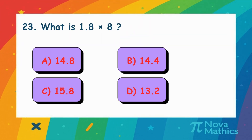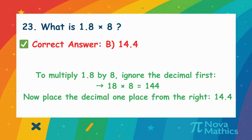22. What is 1.8 times 8? Let's multiply 1.8 by 8. First, think of it without the decimal. 18 times 8 is 144. Now put the decimal back one place. That's 14.4.